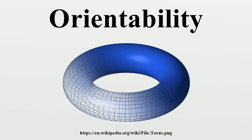Another way to construct this cover is to divide the loops based at a base point into either orientation-preserving or orientation-reversing loops. The orientation-preserving loops generate a subgroup of the fundamental group which is either the whole group or of index 2. In the latter case, the subgroup corresponds to a connected double covering, which is orientable by construction. In the former case, one can simply take two copies of M, each of which corresponds to a different orientation.